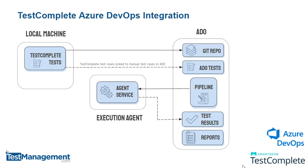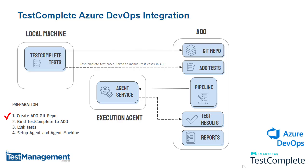Before we can walk that process through end-to-end, we need to complete some preparation work — there are four steps we need to complete up front. First, we need to create the Azure DevOps Git repository for the TestComplete project. Second, we need to bind the TestComplete project to Azure DevOps so that the two can talk. Then we need to link our test cases written in TestComplete to the manual tests defined in Azure DevOps, and of course we need to configure the agent and connect it to Azure DevOps so that it's ready to run our automated tests.